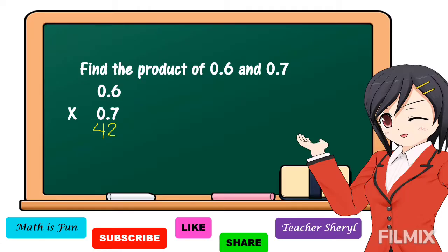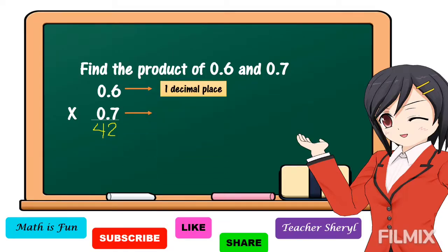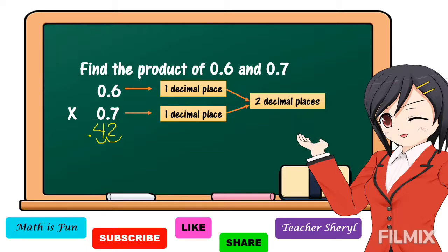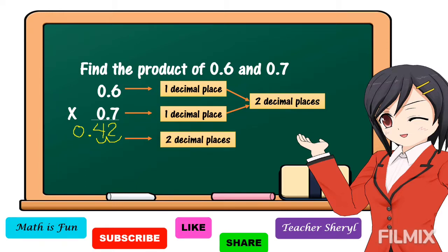Then we're going to count the decimal places in our factors. For our multiplicand, we have one decimal place. For our multiplier, we have also one decimal place. Therefore, we have two decimal places in our factors. So we're going to affix two decimal places in our product. We count from right to left: one, two — then we put the decimal point and zero as the placeholder for the whole number. Therefore, our answer is 0.42.